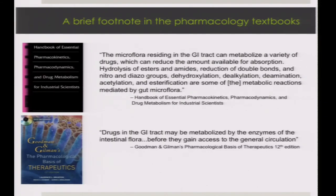In Goodman and Gilman's — the pharmacologic basis of therapeutics, sort of the Bible for pharmacologists — there's actually just one sentence: drugs in the gastrointestinal tract can be metabolized by enzymes of the intestinal flora before they gain access to general circulation. The point being that we've known about these interactions between microbes and drugs for a long time; it's known to affect over 40 known drugs, but we know very little today about exactly how these reactions are taking place.